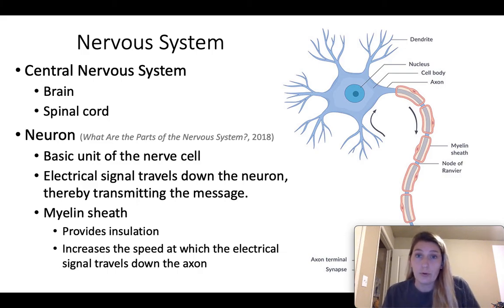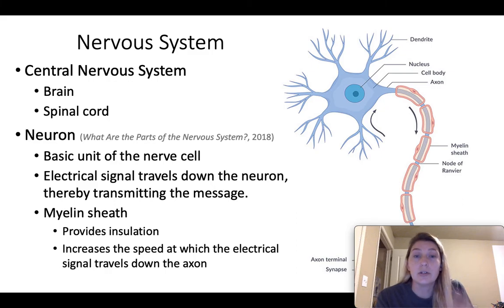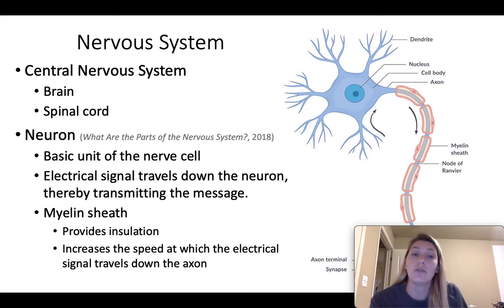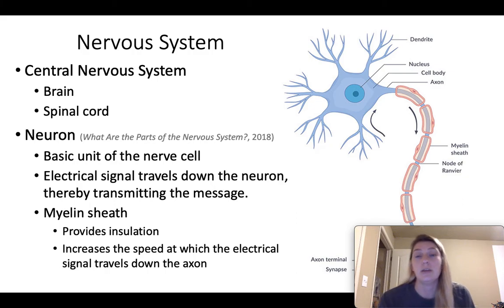Before we get into XALD, we need to know these anatomical structures. Because this affects the nervous system and adrenal glands, I'll talk about the nervous system first. The central nervous system is made up of the brain and spinal cord, which transmit signals via nerves made up of a collection of neurons. The neuron is the basic unit of the nerve cell, and electrical signals travel down the neuron and transmit the message out.